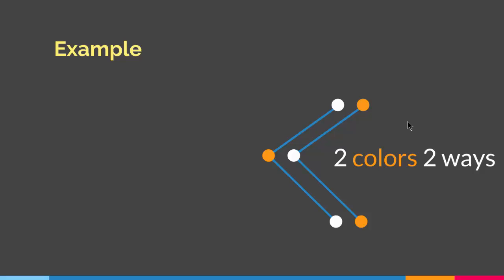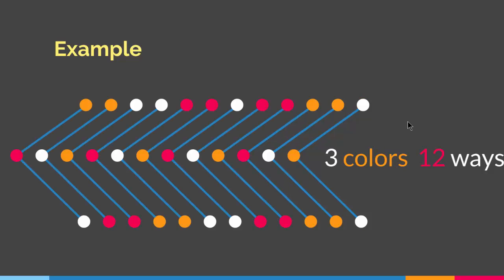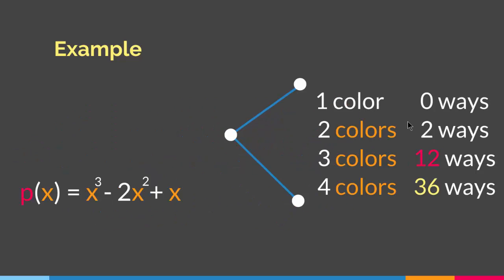So if I have one color I have zero ways to properly color the graph, and if I have two colors I have two ways. What happens if I have three colors? Well in that case I have 12 different ways to properly color the graph. So what happens if I have more colors — say four, five, ten, fifteen, a hundred? Is there a shortcut that tells me how many different ways I can color this graph for a certain number of colors? Well that is when chromatic polynomial kicks in.